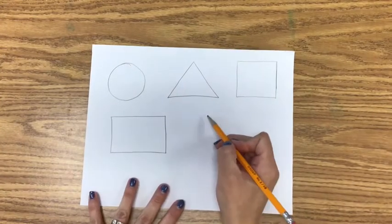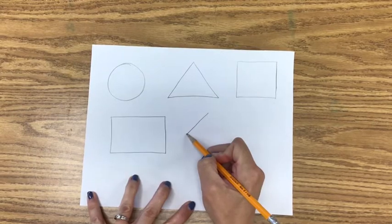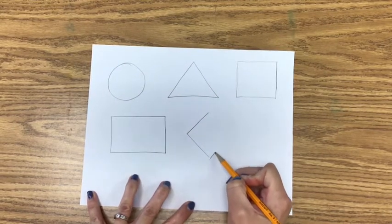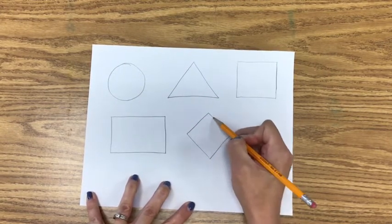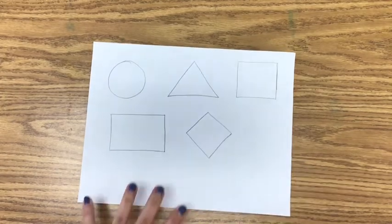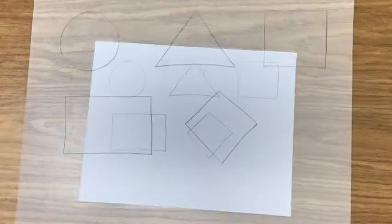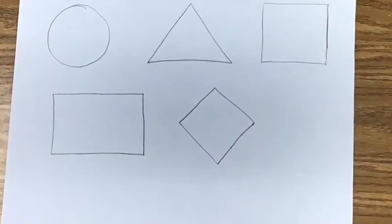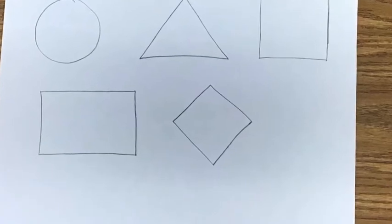And now for a challenge shape. Let's try to draw a diamond. Notice I start at the top, and it has four straight sides. Did you know another name for a diamond is a rhombus? You give it a try.